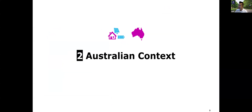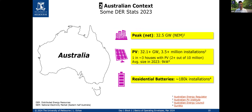There is a question about dynamic limits — yes, they are about both export and import envelopes. However, what is officially allowed by distribution companies in Australia is just flexible exports. I will explain that. Now, what is the context of Australia? Right now, why in 2024? In 2023, the peak net demand was around 32.5 GW for the national electricity market — that's the eastern half of Australia.